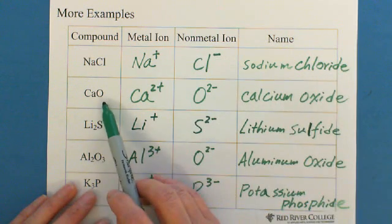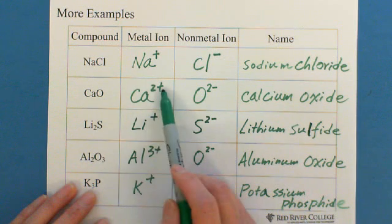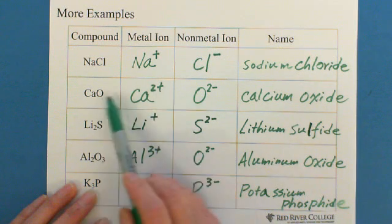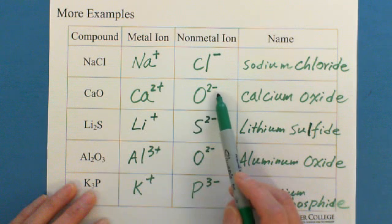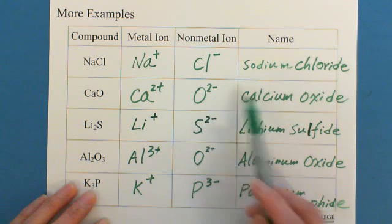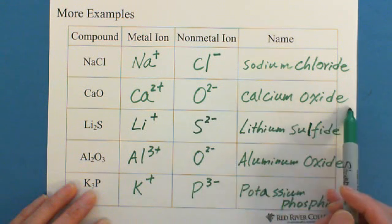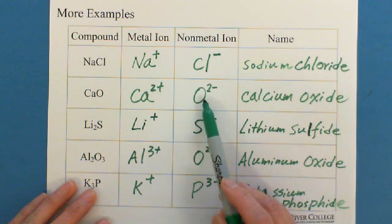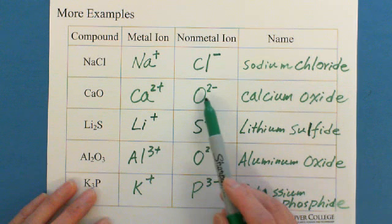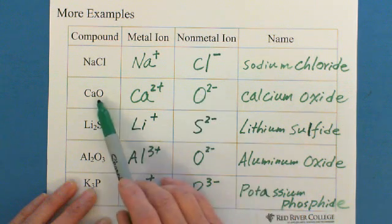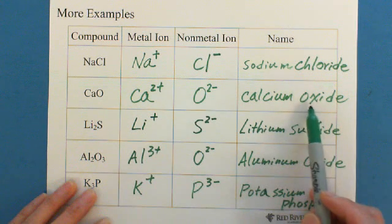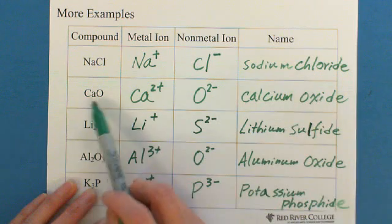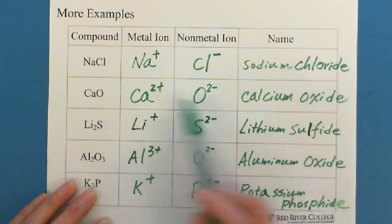CaO, metal ion Ca, with two positive fixed charge, oxygen, two negative charge, name them calcium oxide. Same thing like oxygen, with elements we call oxygen, but as oxygen becomes ion in compound, we call oxide, when it is ionic compound oxide.